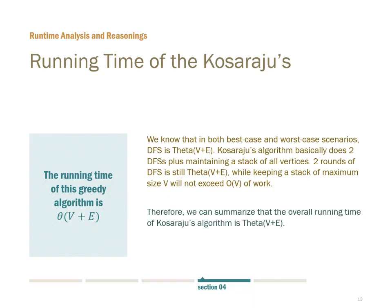The running time of Kosaraju's algorithm is Θ(V + E), because the bottleneck in this algorithm are the two rounds of DFS. Each of them is a Θ(V + E) algorithm, so the overall running time is Θ(V + E) in both best-case and worst-case scenarios.